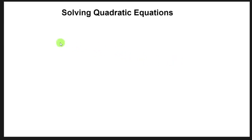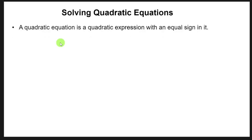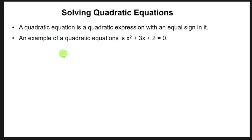So what is a quadratic equation? A quadratic equation is a quadratic expression with an equal sign in it. In other lessons, we looked at quadratic expressions, and today we are looking at solving quadratic equations. An example of a quadratic equation is x² + 3x + 2 = 0. Such an expression is called a quadratic equation.